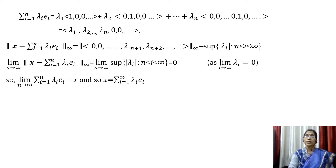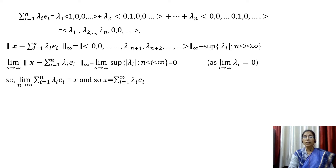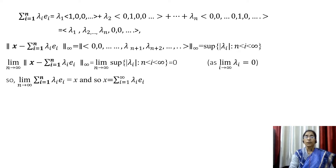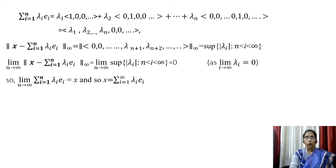This is by definition of the infinity norm equal to supremum of |λᵢ| for n < i < ∞. Applying the limit as n → ∞, since the sequence (λᵢ) is in C₀ and every sequence in C₀ converges to 0, this tends to 0. Thus limit as n → ∞ of the infinity norm of x minus Σᵢ₌₁ⁿ λᵢeᵢ equals 0, and so x = limₙ→∞ Σᵢ₌₁ⁿ λᵢeᵢ = Σᵢ₌₁^∞ λᵢeᵢ.